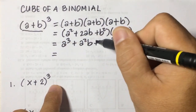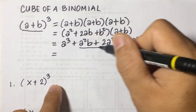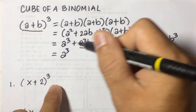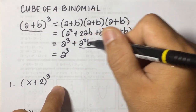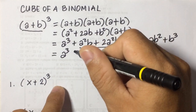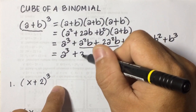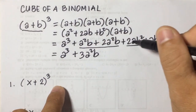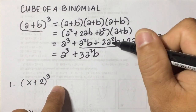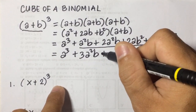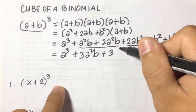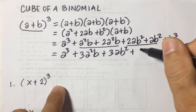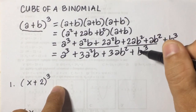Now we have like terms, so we combine them: a cubed, then a squared b plus 2a squared b gives 3a squared b, then 2ab squared plus ab squared gives 3ab squared, and last is positive b cubed.